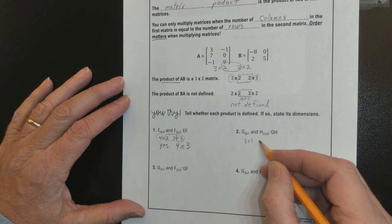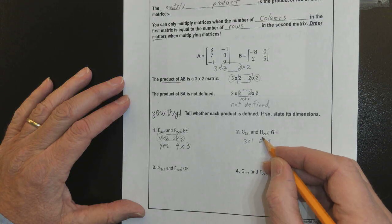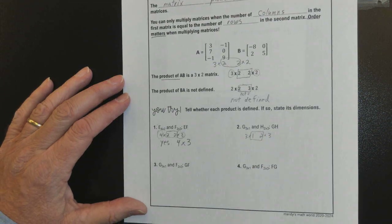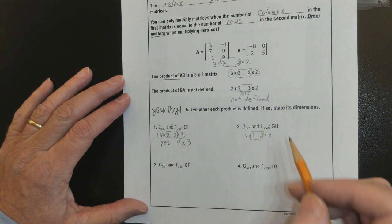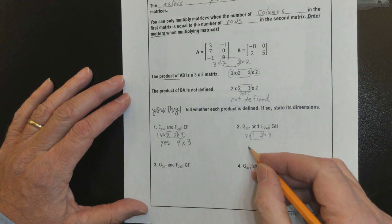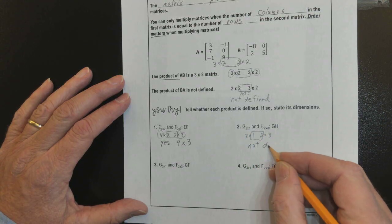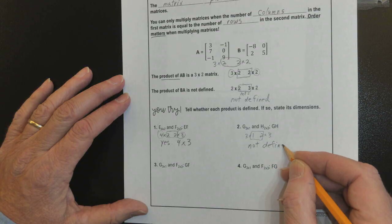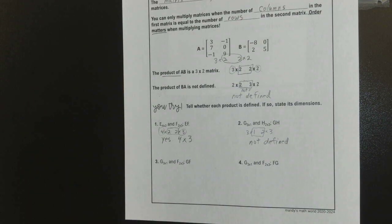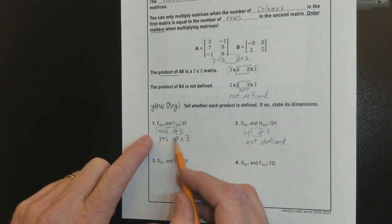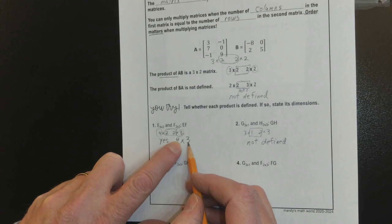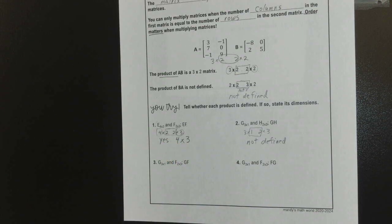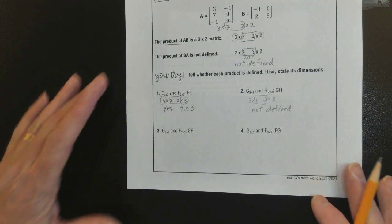Alright. Let's look at GH here. You got a 3 by 1. You got a 3 by 1 and a 2 by 3. Are we able to multiply to get GH? No. No. So, this one's not defined. Only if the insides are the same? If the insides are the same, we can do it. And if we can do it, those outsides are how big the matrix that comes out is going to be. Alright? Give 3 and 4 a shot.